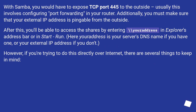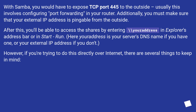With Samba, you would have to expose TCP port 445 to the outside — usually this involves configuring port forwarding in your router. Additionally, you must make sure that your external IP address is pingable from the outside. After this, you'll be able to access the shares by entering backslash your address in Explorer's address bar or in Start > Run.